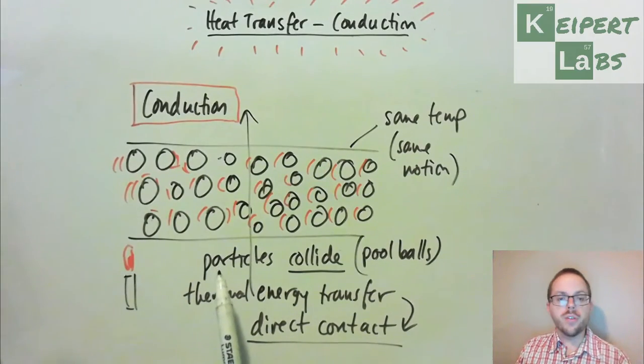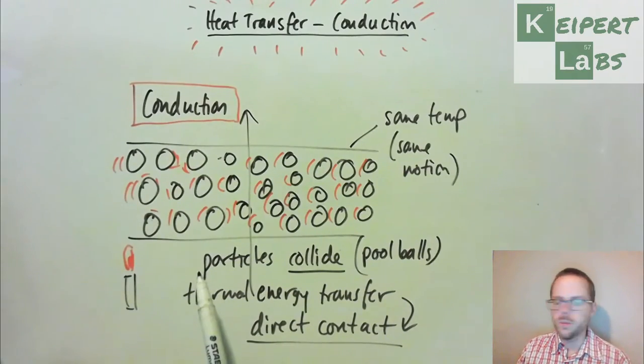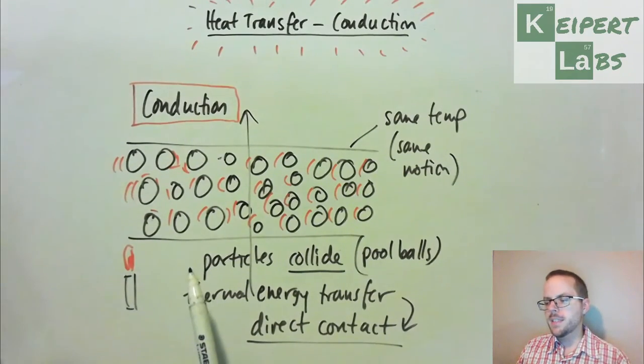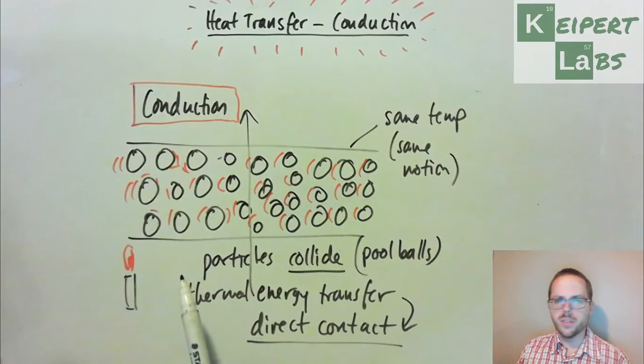Now so conduction is generally a pretty slow process. Metals conduct thermal energy faster than non-metals. So a metal spoon will conduct it better than a wooden spoon. Okay, but it's still a relatively slow process. It takes a little while for that thermal energy to make its way through because the particles have to collide.